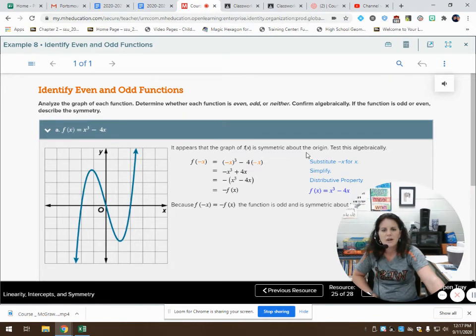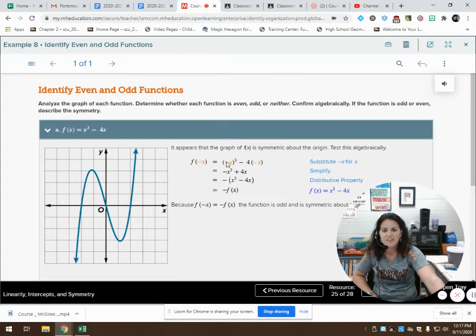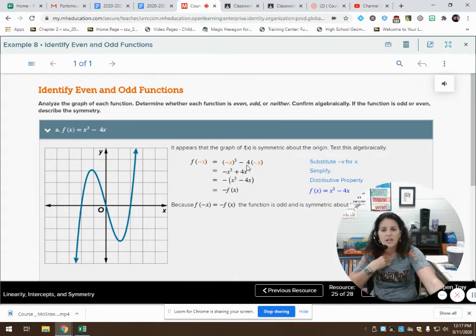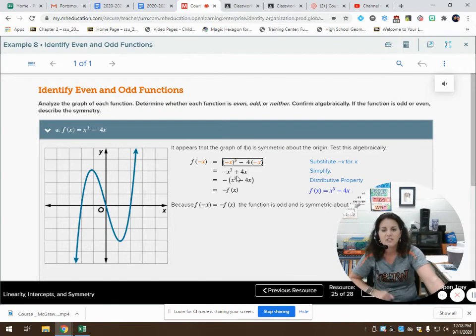It appears that the graph f of x is symmetric about the origin. If I was to rotate it about the origin, then it would lie on top of itself. We can test that algebraically by doing the opposite. The opposite of x, instead of having the x value here, we take the opposite of that, which is negative x. Negative x cubed is still going to result in a negative x, because if I have a negative times a negative times a negative, negative times a negative is a positive, then times that third negative is a negative, so it still results in a negative x cubed. Here, I have minus 4 times negative x, a negative 4 times a negative x, a double negative becomes a positive 4x.